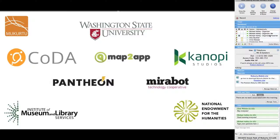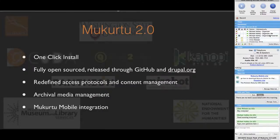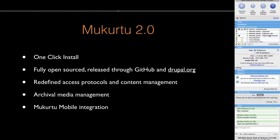The most sought-after features of Mukiti 2.0 include a really easy way to install — a one-click install via a web form — plus a simple installation profile for your own servers. We're fully committing to a completely open source version dropping in early 2015, both on GitHub and Drupal.org. We've completely redefined the access protocols and content management system based on four years of gathered needs.